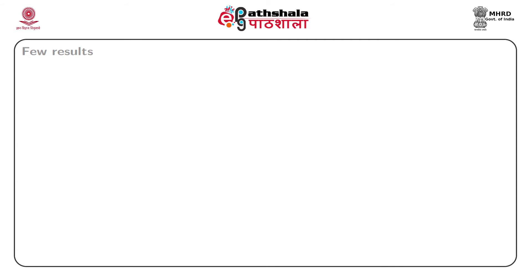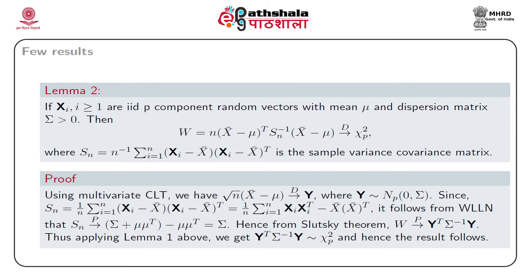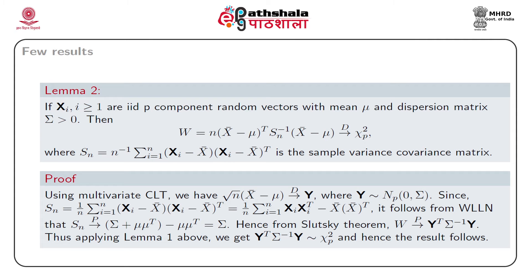Next, consider Lemma 2. If x_i are iid p-component random vectors with mean mu and positive definite dispersion matrix sigma, then w defined as n times (x-bar - mu)-transpose times S_n-inverse times (x-bar - mu) converges in distribution to a chi-square distribution with p degrees of freedom. Here S_n is the sample variance-covariance matrix defined as (1/n) * summation from i=1 to n of (x_i - x-bar)(x_i - x-bar)-transpose.